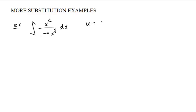If you set u equal to 1 minus 4x cubed, this is the setting the u equal to the denominator trick. du is negative 12x squared dx. And that means that x squared dx is negative 1 twelfth du.